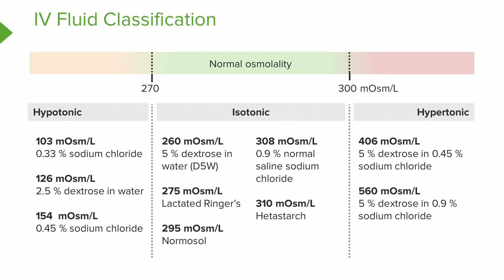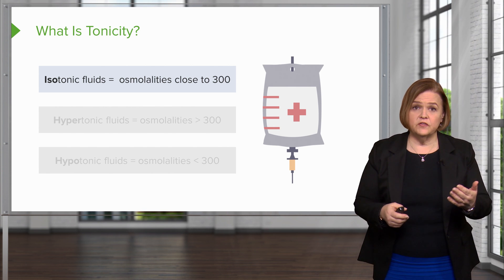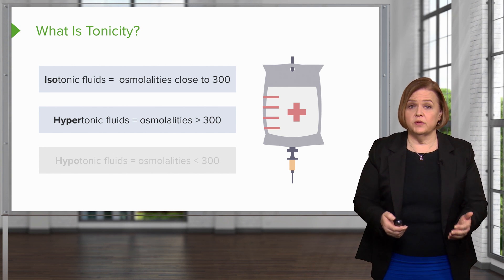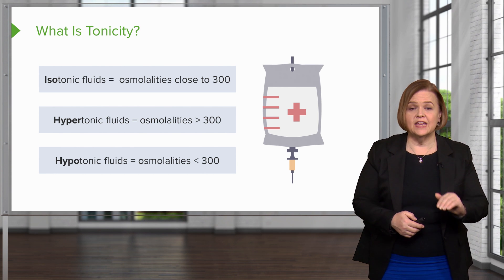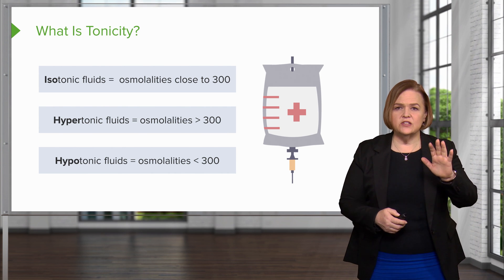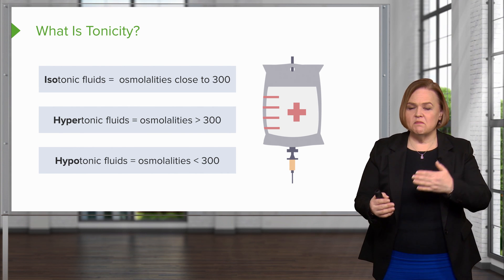Isotonic fluids are close to 300, the same as my plasma. Hypertonic is greater than 300 osmolality, and hypotonic is less than 300. Which way does fluid shift with an isotonic fluid? Trick question — it shouldn't really shift because it matches the same tonicity.